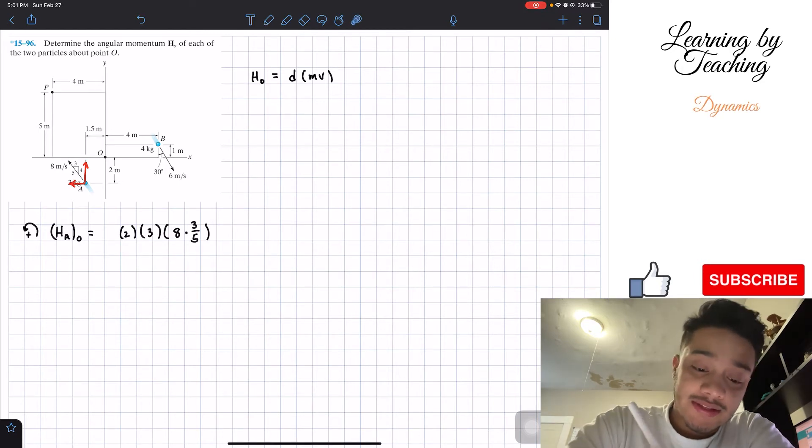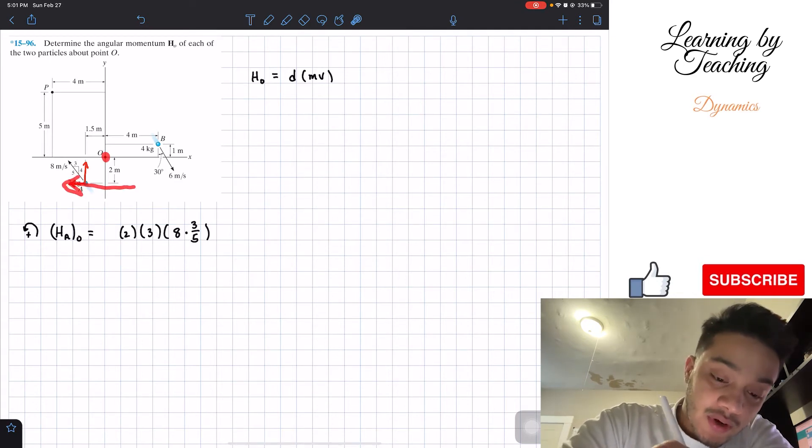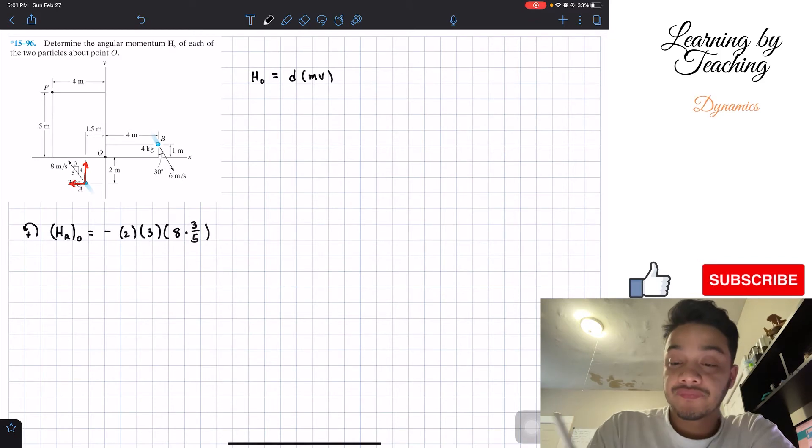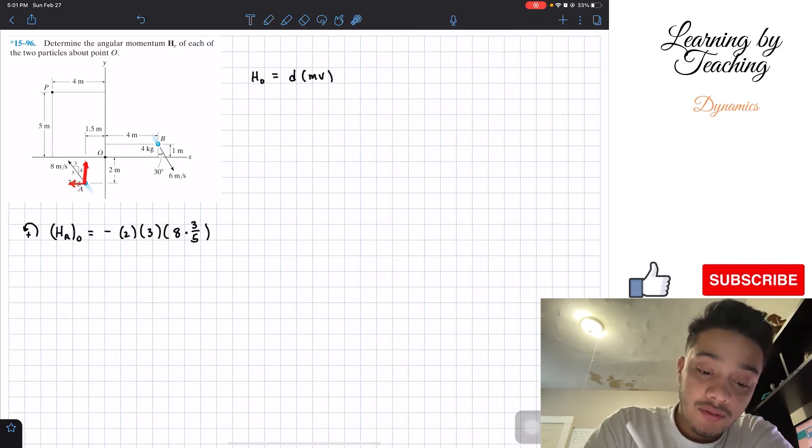Now, the last thing that we need to know is that since I'm interested about this point O and the velocity is going this way, my moment will want to go in the clockwise direction. Therefore, it's going to be negative.